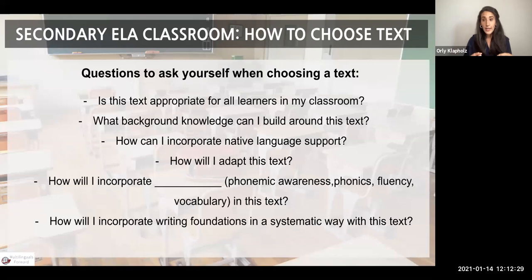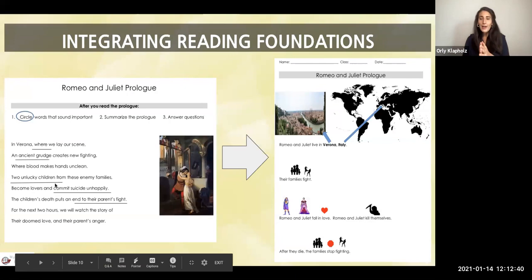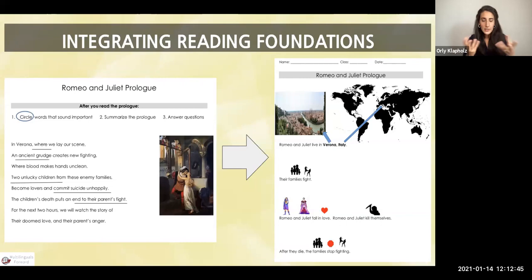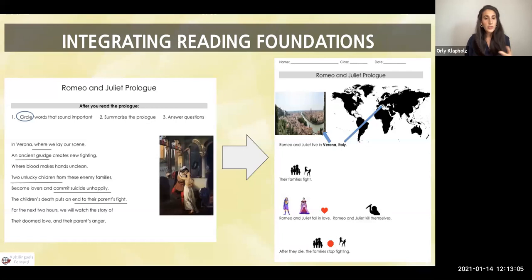How will I incorporate the foundational skills in this text — phonemic awareness, phonics, vocabulary, fluency — and what activities will support students? And how will I incorporate writing foundations in a systematic way? We know how much reading and writing support each other. We want our students to write no matter what — whether that's a checkmark or circling something. We want them involved in our classes in order to support them.